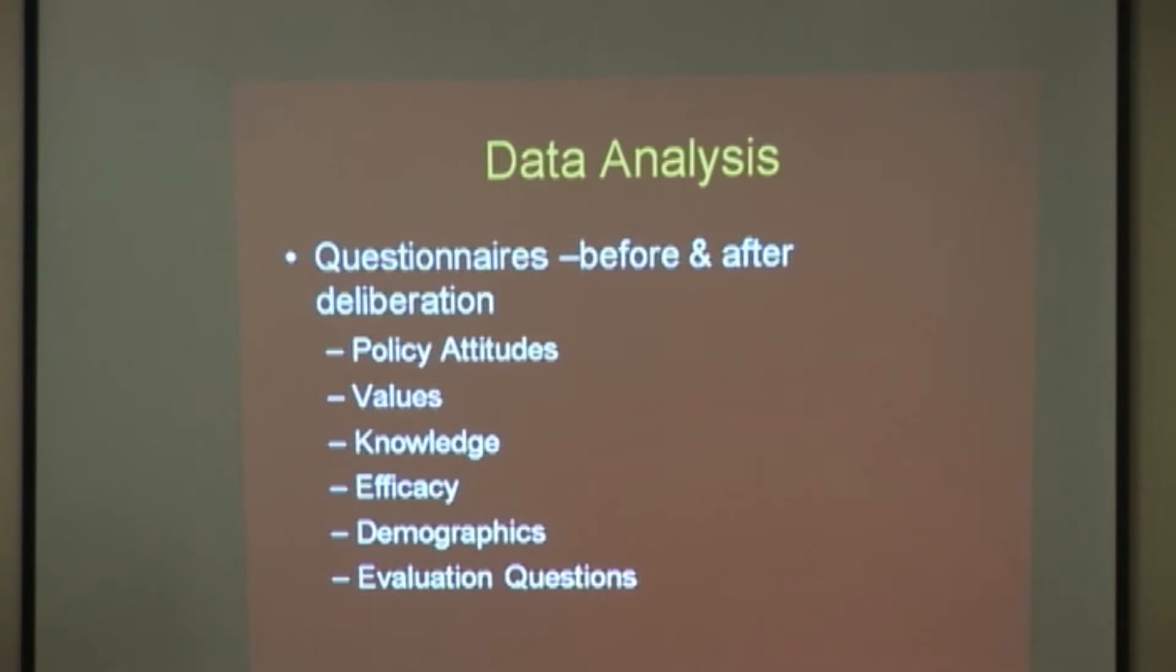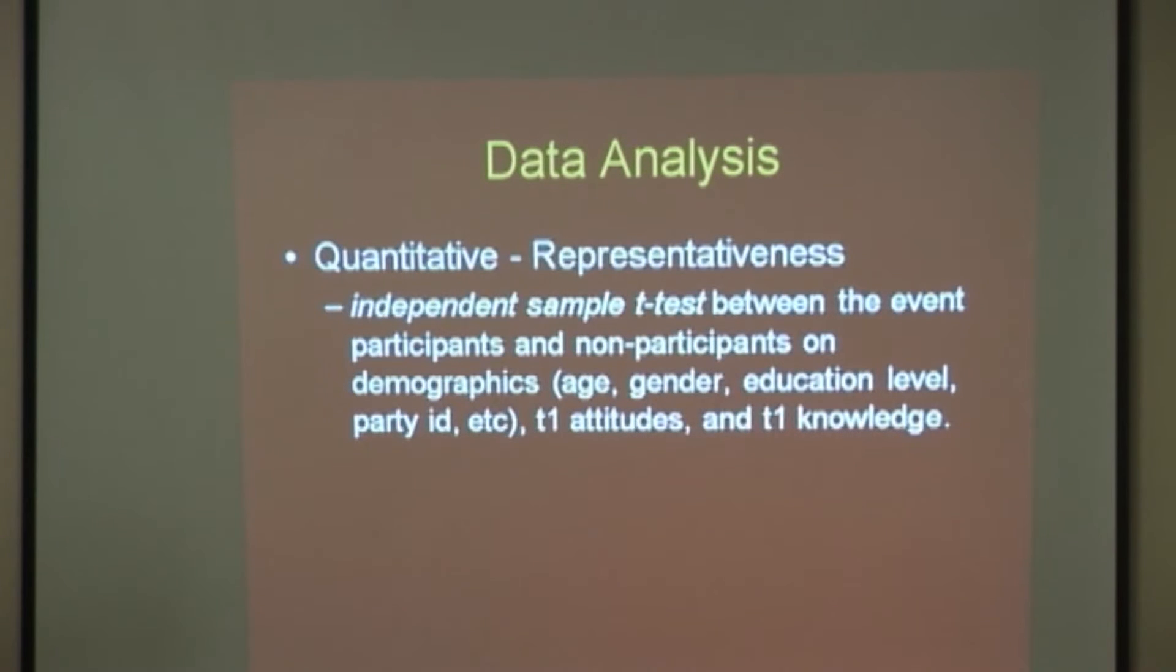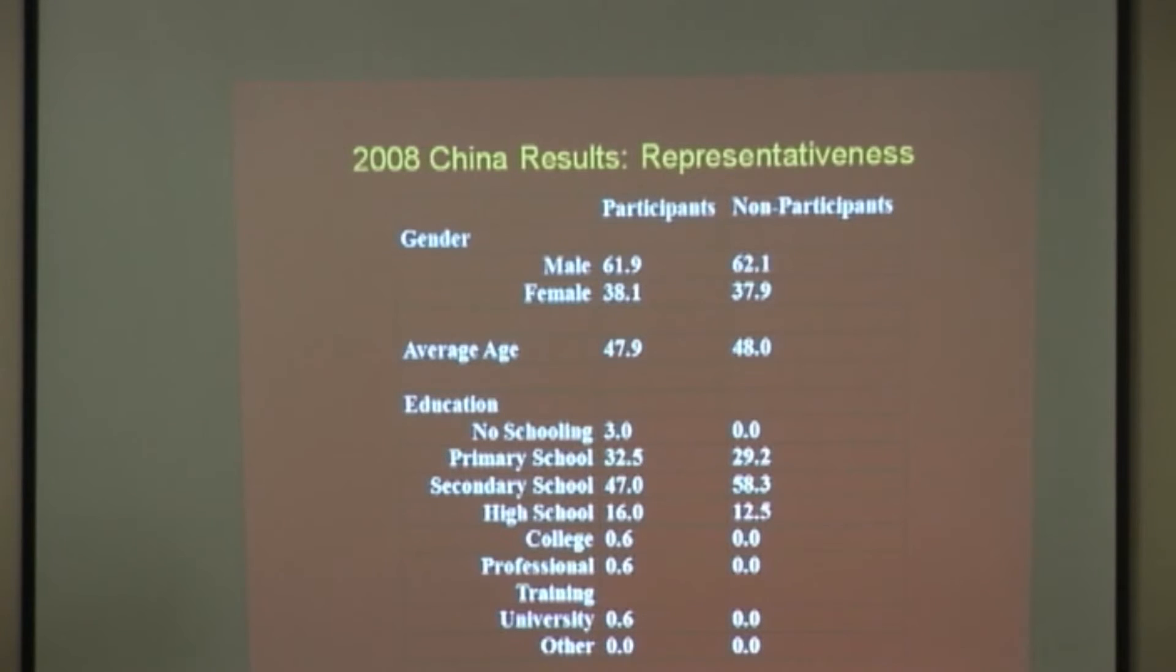The quantitative analysis that we do, one type of analysis that we always do is called representativeness. It's essentially trying to make sure that the people that attend, the participants, that sample is similar to the non-participants and, if possible, the greater population. So we compare based on demographics and also on attitudes. A sample of this, just very quickly, this is from the 2008 China deliberative poll where we compared participants and non-participants in their demographics, and there were no big differences.